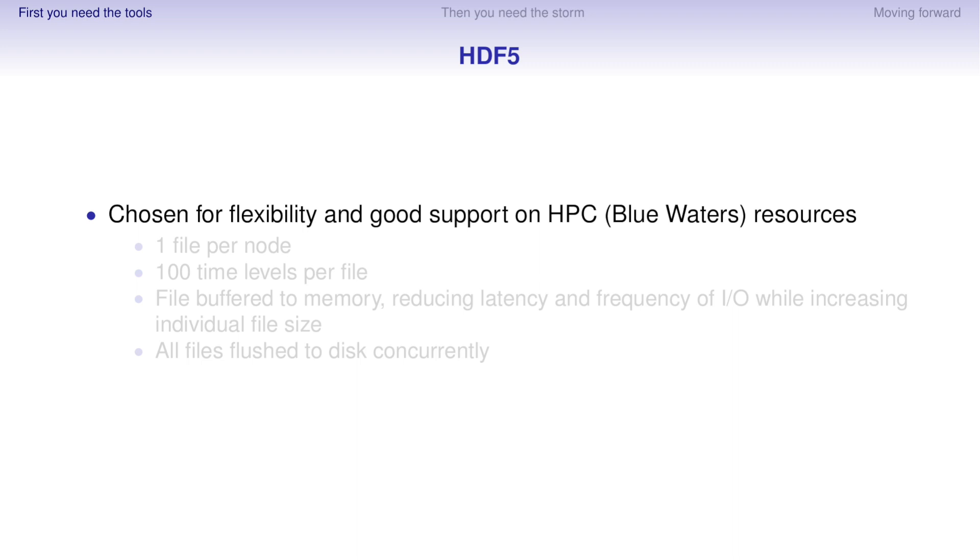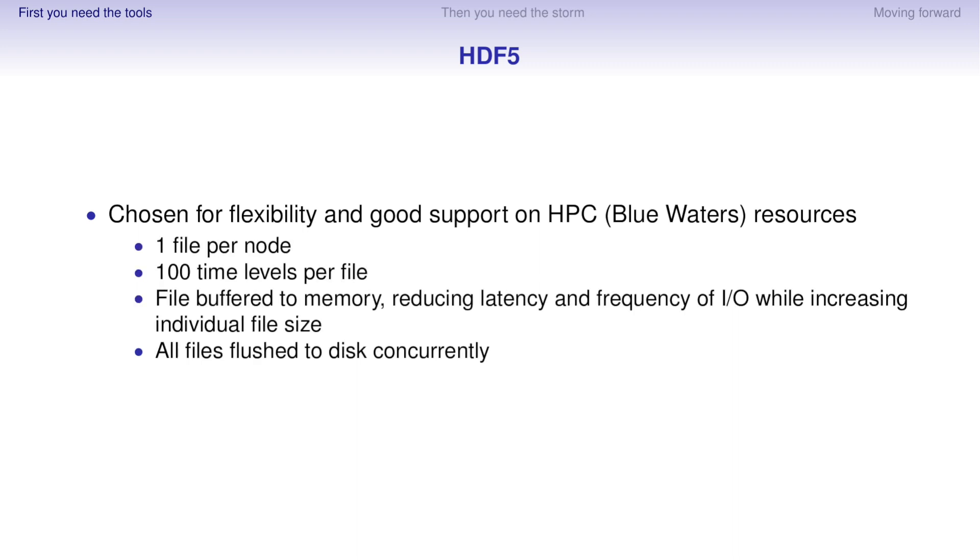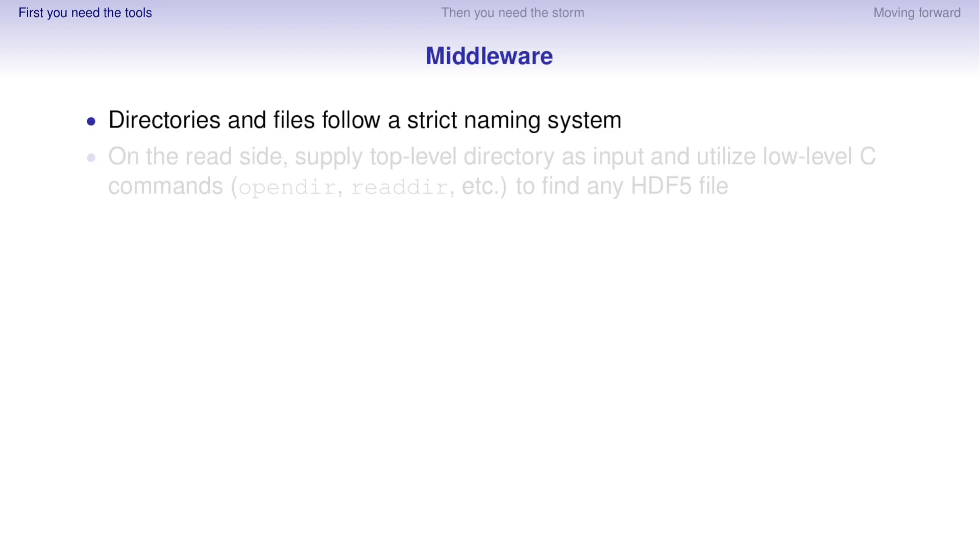We chose HDF5 because it is flexible, has good support on HPC machines like BlueWaters. I've been in touch with the developers several times to help work out kinks and issues I've had. I've settled on a format where I use one file per node, about 100 time levels per file, and I buffer these all to memory, one per node, flush them all to the disk. And currently BlueWaters seems to do pretty well with this type of I/O, with the Lustre file system, the way they have it configured.